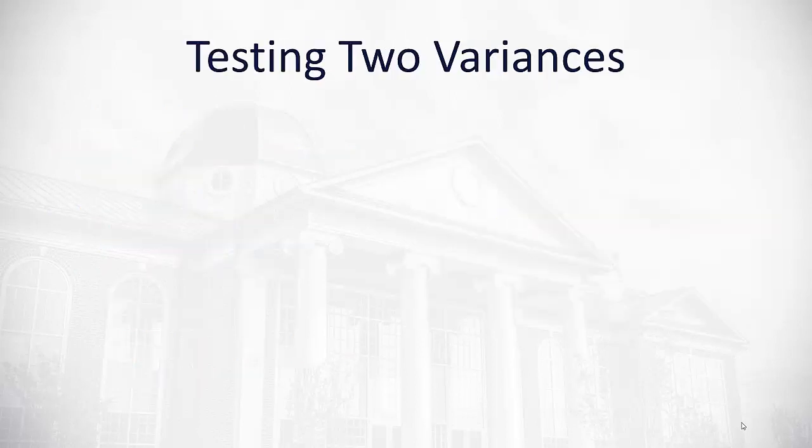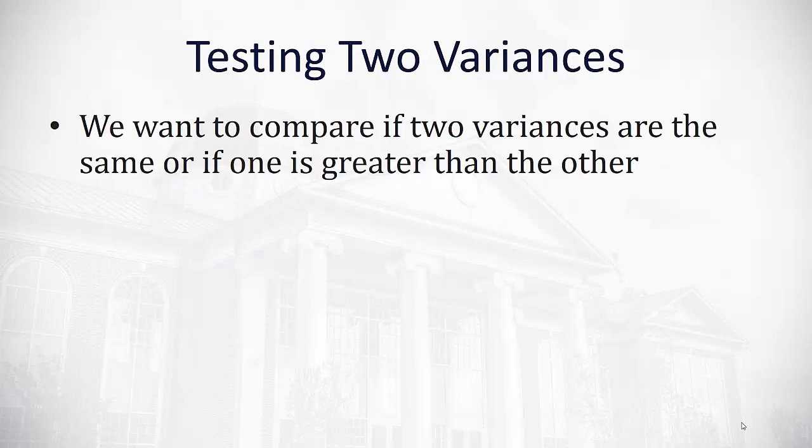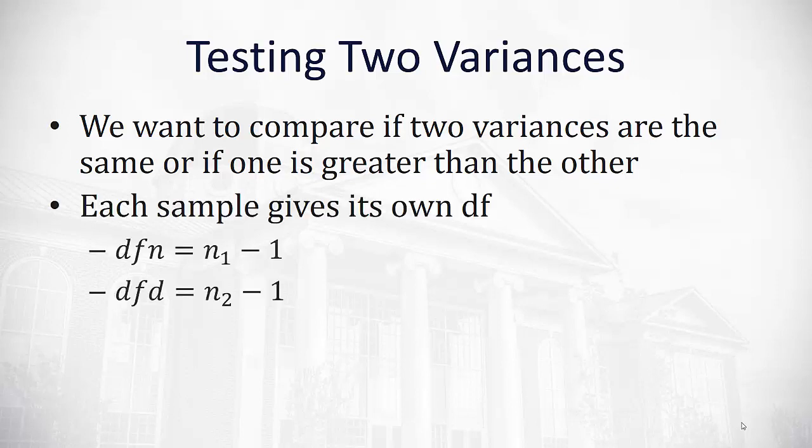Now, in this video, we're interested in comparing two variances. We want to see if they're the same as each other or if one is greater than the other. We'll have two groups that we're comparing their variances from, and each group will have its own degrees of freedom. The degrees of freedom of the numerator is df n equals n1 minus one, and the degrees of freedom of the denominator is df d equals n2 minus one.